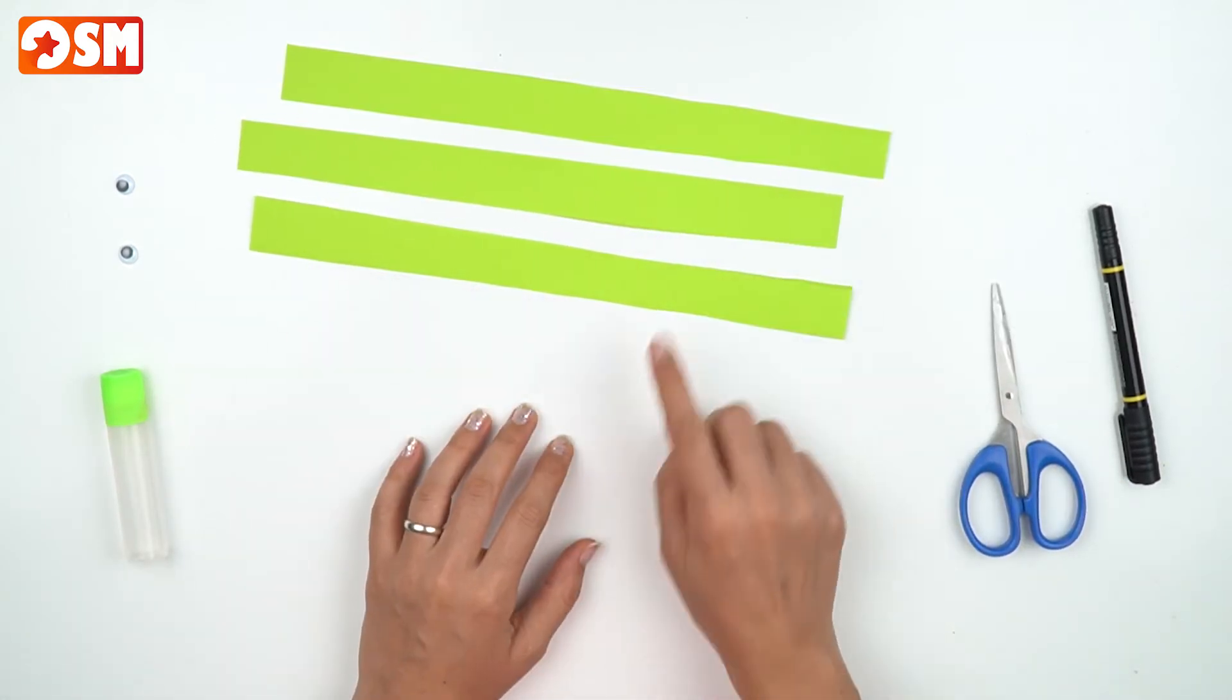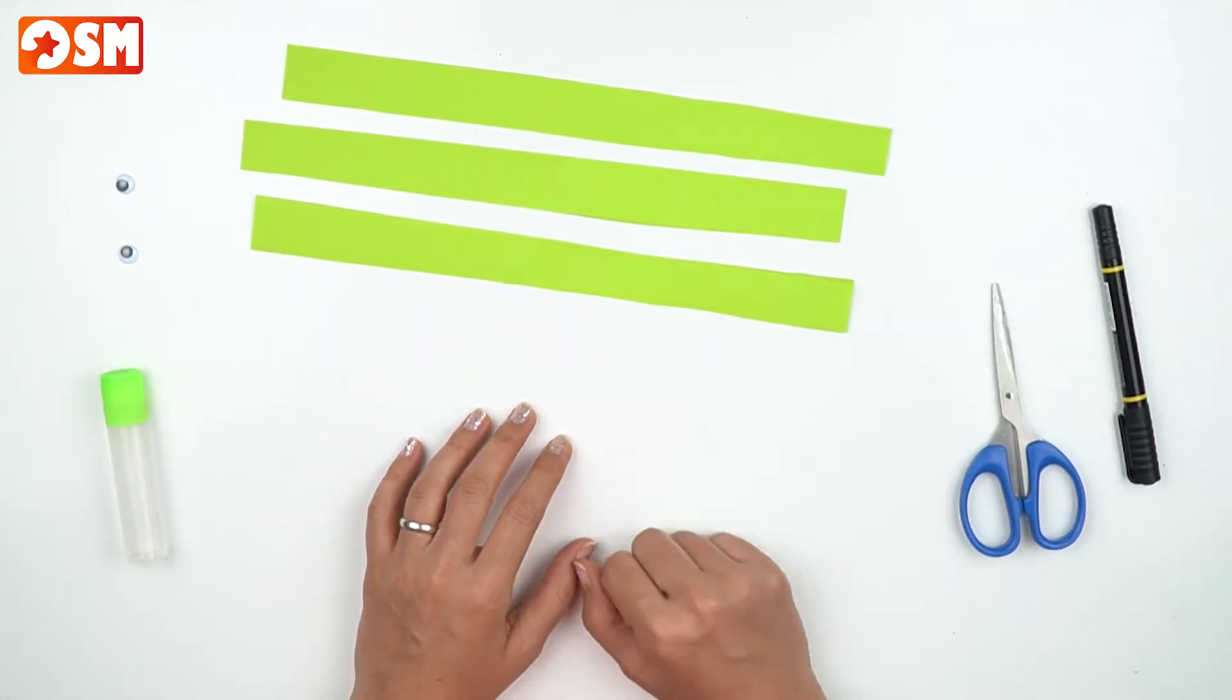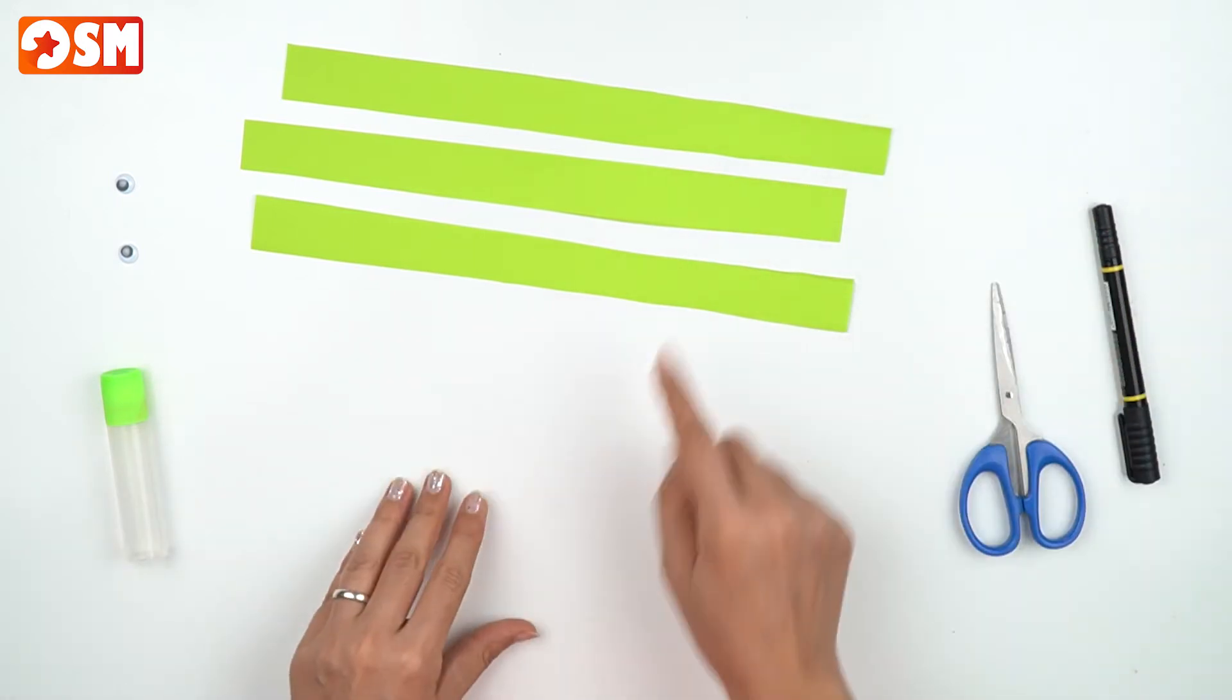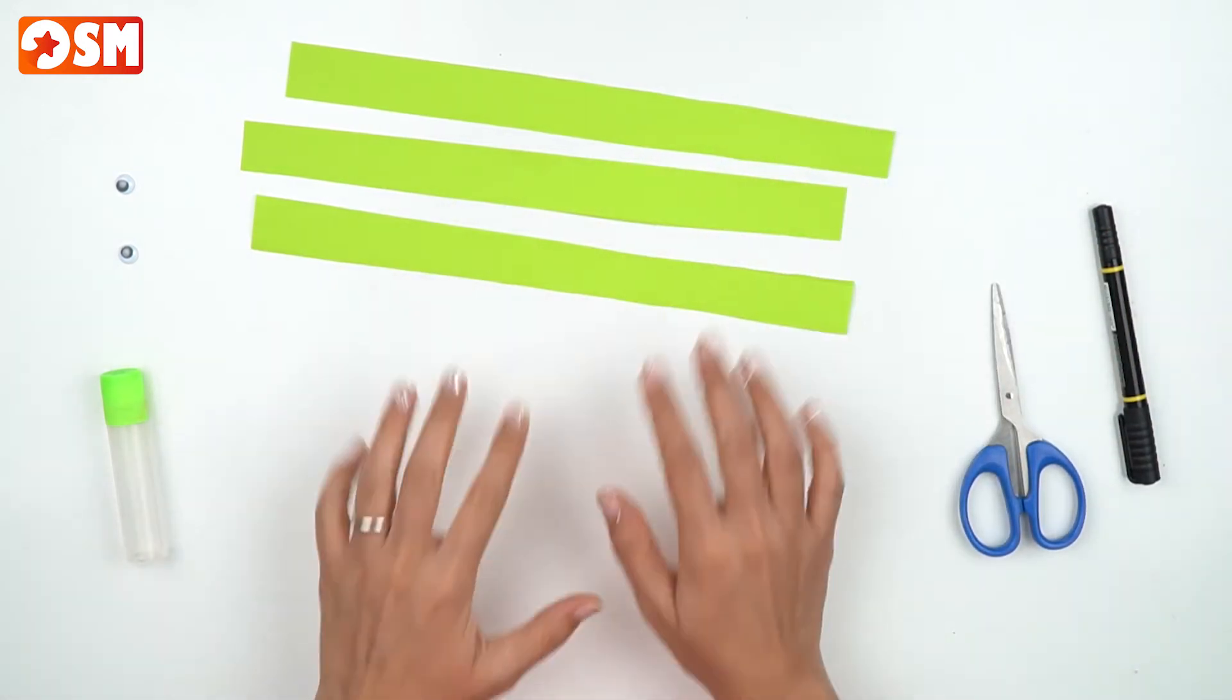Okay, I have only three strips. If you want to have a longer snake, you can always have more strips.